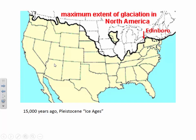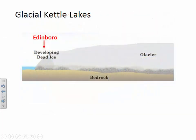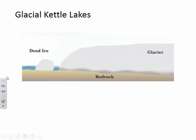Notice that the location of Edinburgh here is very close to the southern glacial margin. As the glaciers began to retreat north into Canada, blocks of ice broke away from the leading edge of the glacier. These blocks of ice, as they broke away and separated from the active moving part of the glacier, are known as stagnant or dead ice.